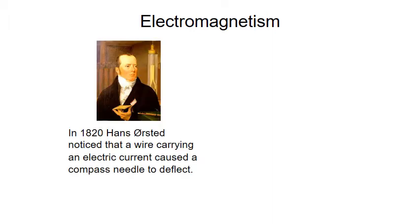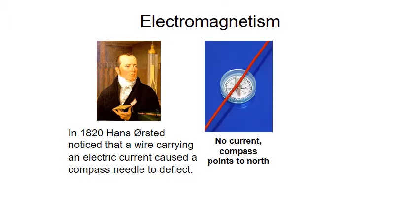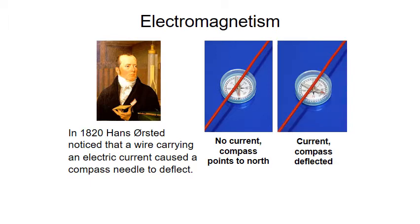So in 1820, Ørsted noticed that a wire carrying electrical current caused a compass needle to deflect. He had a compass underneath a wire — when there was no current passing through that wire, the compass pointed north. However, when Ørsted put electrical current through the wire, the compass was deflected.